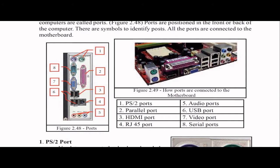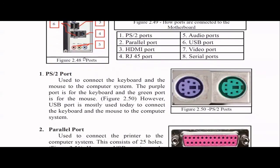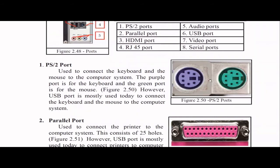Number one is about PS/2 ports. Can you see it has two colors? Remember, these ports are no longer found in the latest computers. These two were used for the keyboard and the mouse — the purple port is for the keyboard and the green one is for the mouse. Nowadays we have USB ports, so these PS/2 things are actually outdated. In laptops we definitely cannot see these things.